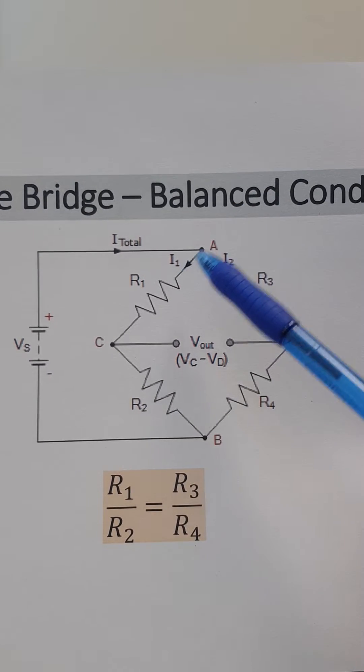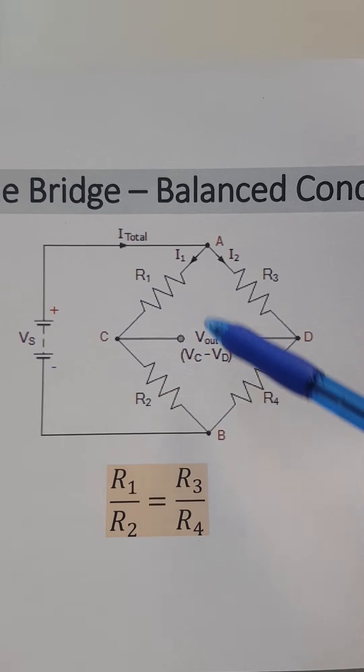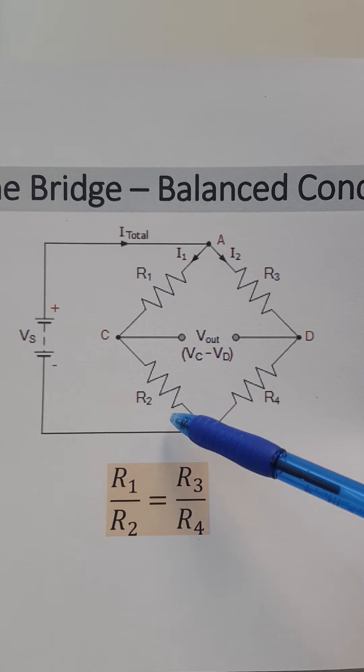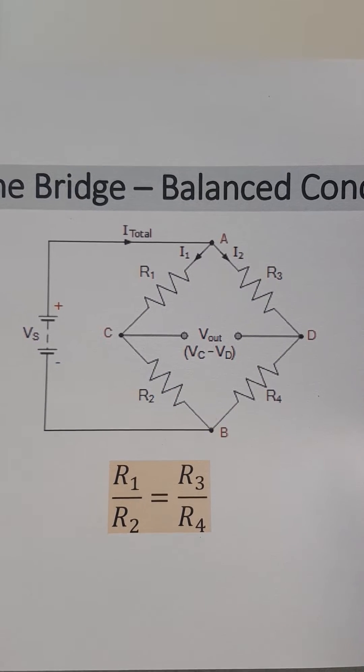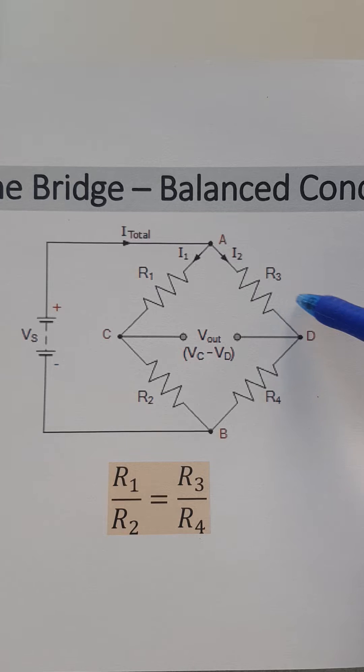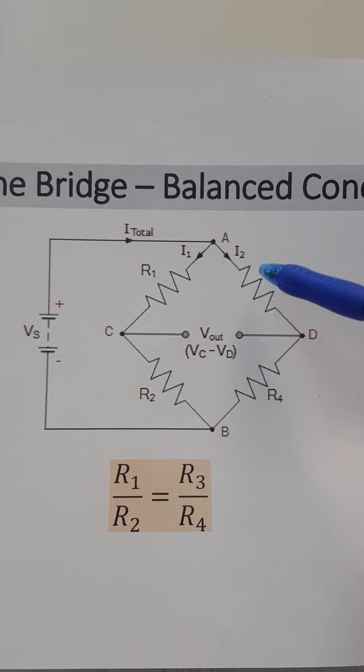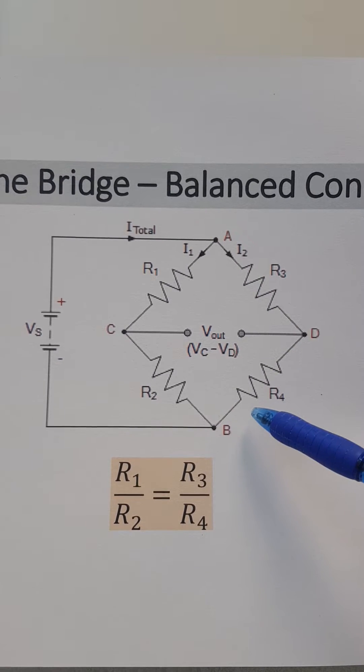It's basically two arms. This is the first arm composed of two resistors in series, R1 and R2, and then a second arm which is composed of two resistors in series, R3 and R4.